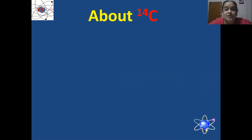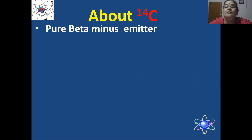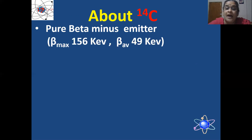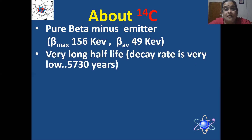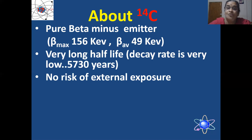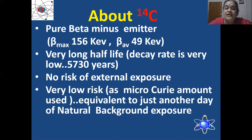About 14 carbon as a radionuclide: it is a pure beta emitter, beta minus. The maximum beta energy it can give is 156 keV, and the average is just 49 keV. It is a very long half-life radionuclide — 5730 years — so the decay rate is very slow, like many human lifespans. There is no risk of external exposure because there are no gamma radiations. It is a very low-risk method used in microcurie amounts, equivalent to just another day of natural background exposure.